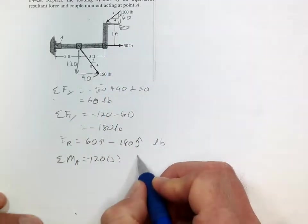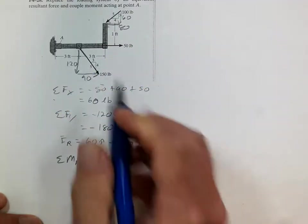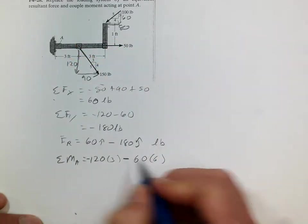So we'll start with 60. The 60 is going through there and it has a distance of 6. And that will also cause rotation in the counterclockwise, so that's negative.